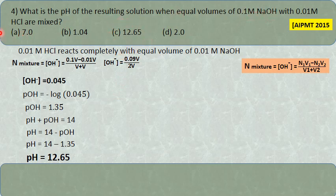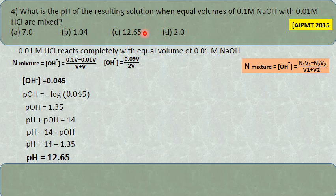Once you know NaOH is in excess, pH will always be greater than 7. Among the answer choices, option C is the alkaline one at 12.65, so C is the correct answer directly from that clue.